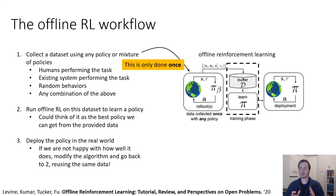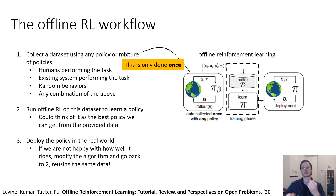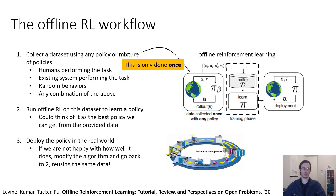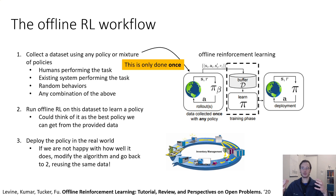The end goal in offline reinforcement learning is to get a better policy than the one that collected your data. If you have maybe 10 humans trying to perform the task, you might hope to extract a policy that takes the best parts of all of them — taking the best decisions and discarding the worst. For instance, in inventory management, you could take a data set of logs of inventory levels and resulting profits from the past, run your offline RL algorithm, and deploy the proposed strategy hoping it performs better.